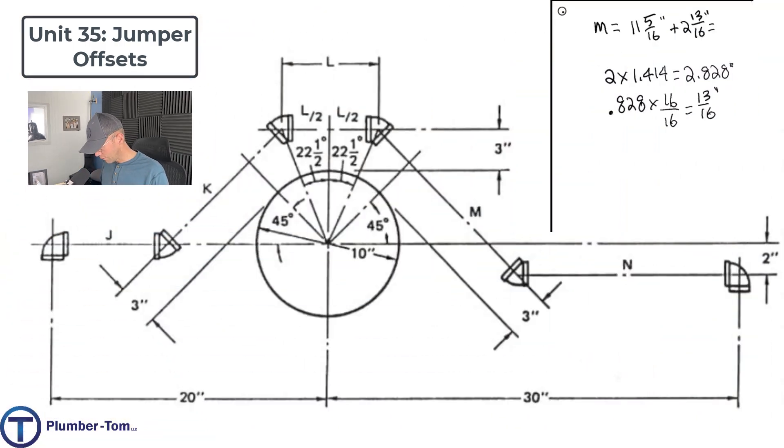All right. Anyway, if we add 11 and 5 sixteenths and 2 and 13 sixteenths, we're going to come up with 13 and 18 sixteenths. We can reduce that fraction, right? We'll take 16 over 16 out of there. That would make it 14 and 2 sixteenths. Or we can reduce 2 sixteenths, 14 and 1 eighth. That's accurate. That's M. Our measurement for M, 14 and 1 eighth.